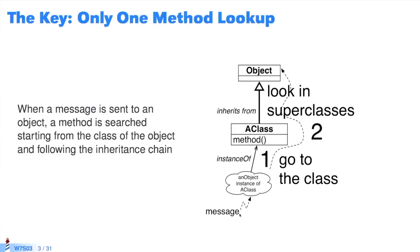when we send a message to an object, we search in the object's class via the instantiation link. If it isn't there, we follow the inheritance chain. We always start in the class, then follow the inheritance chain. This rule must be followed systematically.